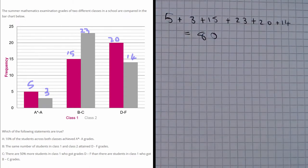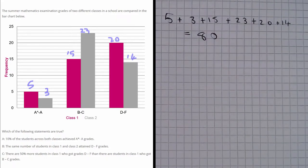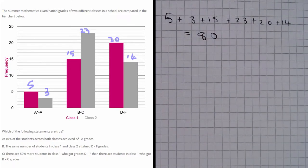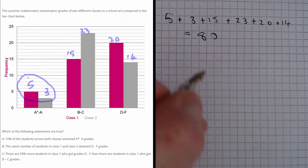So we can see that we've got 80 pupils in total. And now we need to see how many people have A star to A grades. Well we can see we have 5 in class 1 and 3 in class 2. Adding those together we have 8.